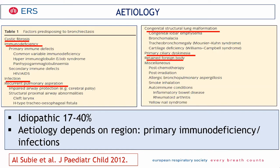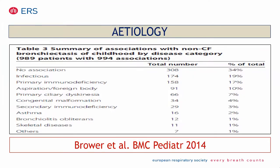The etiology depends a lot on the region of the world. Primary immunodeficiency is the main cause in developed countries, and infection in low-income countries. This is a study published some years ago on more than 900 patients. They confirmed that in 30 percent of the cases there was no association with an etiological cause, 19 percent were secondary to infection, 17 percent were secondary to primary immunodeficiency, and only 7 percent were secondary to primary ciliary dyskinesia.